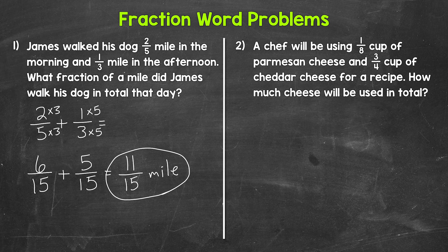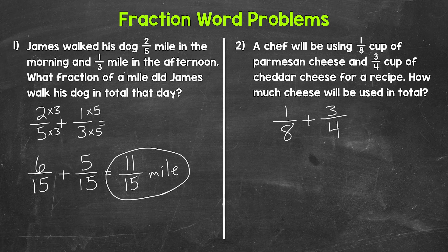Let's move on to number two, where a chef will be using one-eighth of a cup of Parmesan cheese and three-fourths of a cup of cheddar cheese for a recipe. How much cheese will be used in total? The cheeses are being combined into this recipe, so we need to find the total by adding. We need to do one-eighth of a cup of Parmesan cheese plus three-fourths of a cup of cheddar cheese. We do not have a common denominator, so that's what we need to do first in order to add.